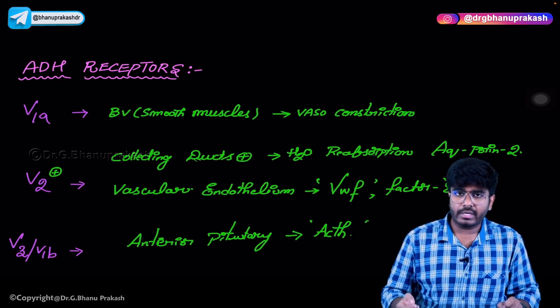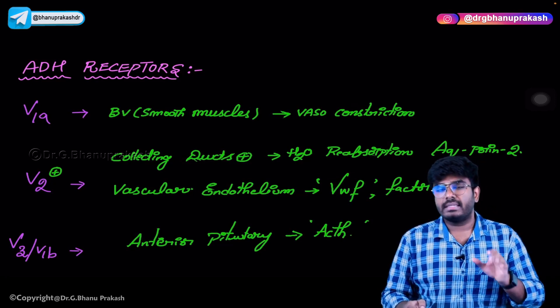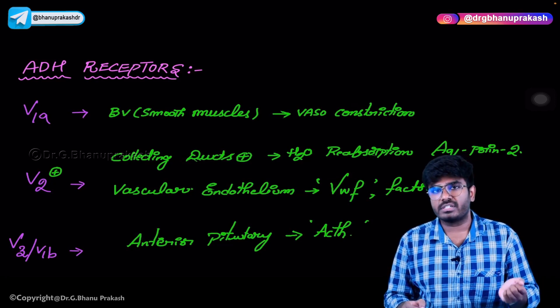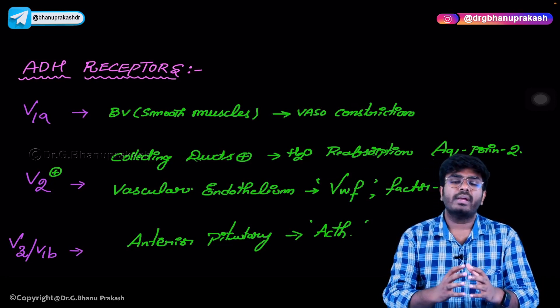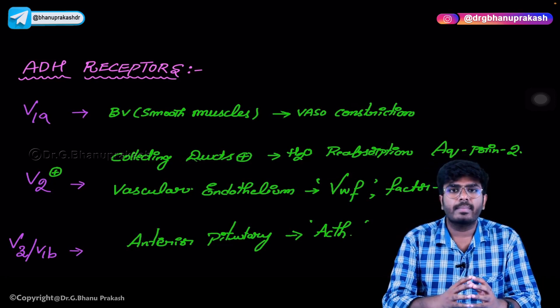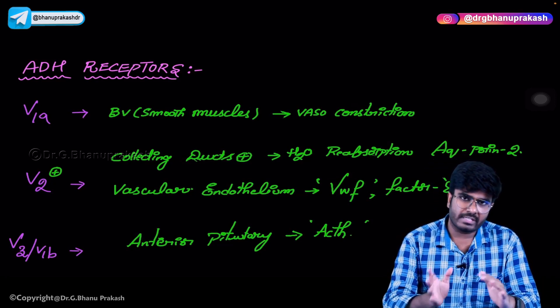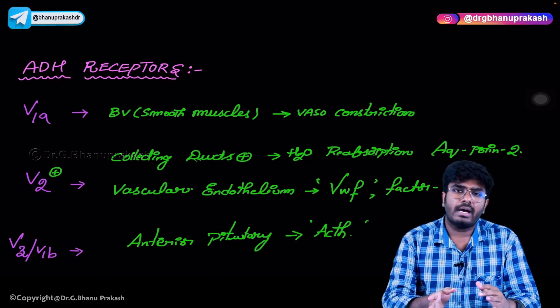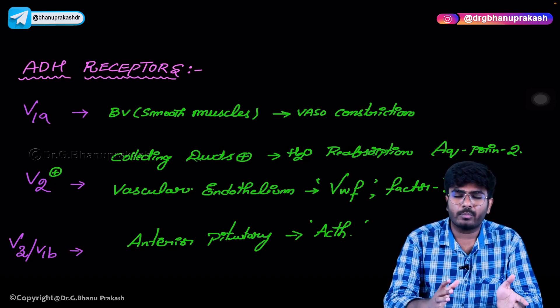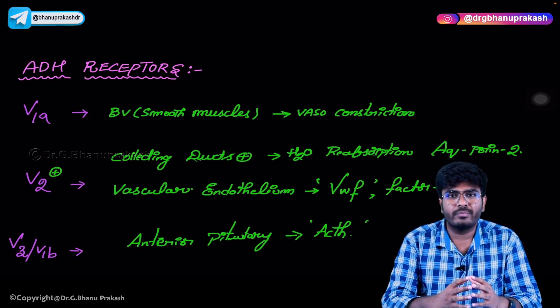Those are the three types of ADH receptors — their location and function. I've covered all the important points about vasopressin, oxytocin, and the posterior pituitary hormones. Hope the video was helpful. Thank you.